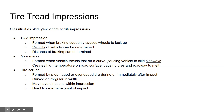Tire tread impressions are classified as either skid, yaw, or tire scrubs. Skid impressions happen when you brake suddenly and your wheels lock, literally skidding along the ground — you can determine how fast the car was moving and how far they had to brake. Yaw marks are formed when you take a curve too fast and the vehicle skids sideways, creating high temperature on the road surface due to friction where the tire and roadway melt together. Tire scrubs are caused when a damaged or overloaded tire bursts, becoming curved or irregular in width, sometimes with striations, and can indicate the point at which the tire failed.